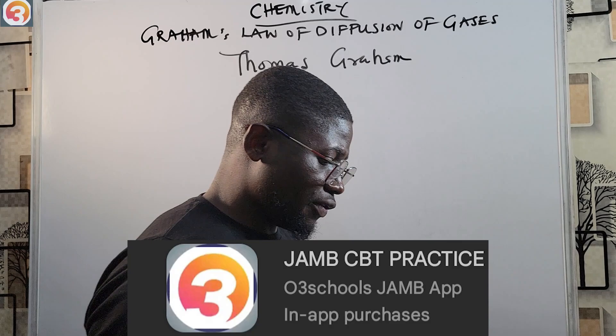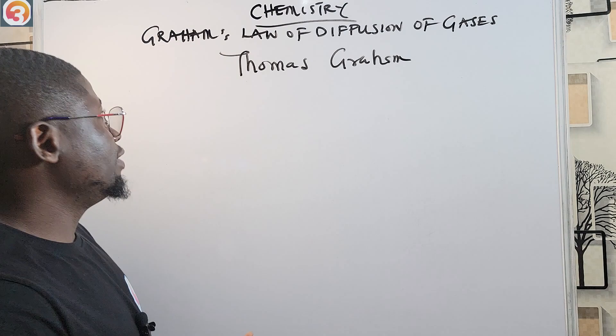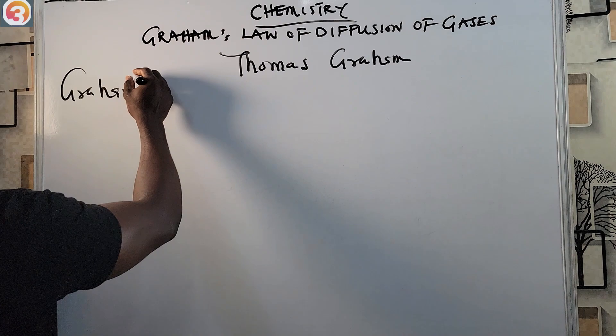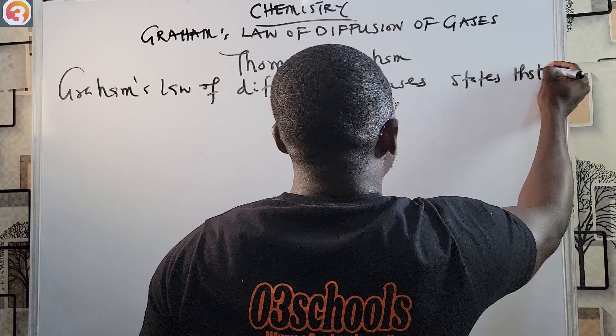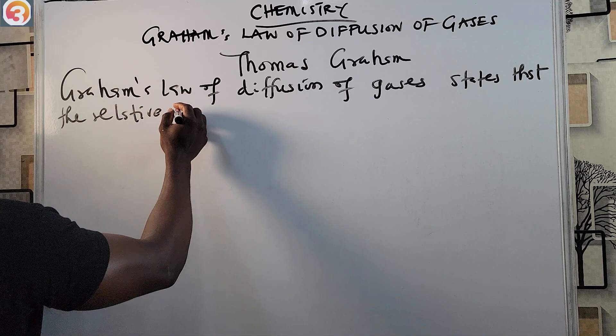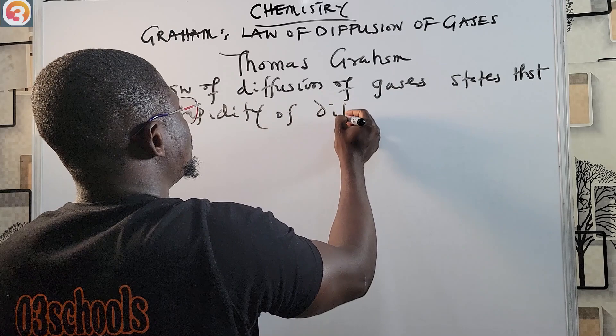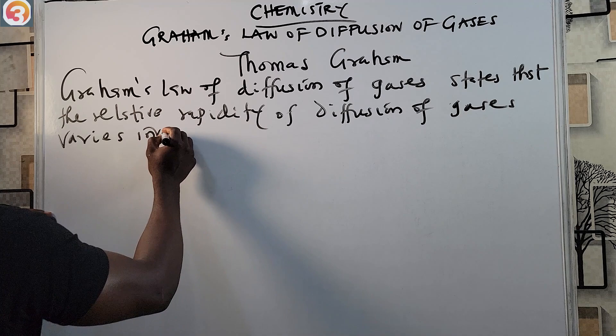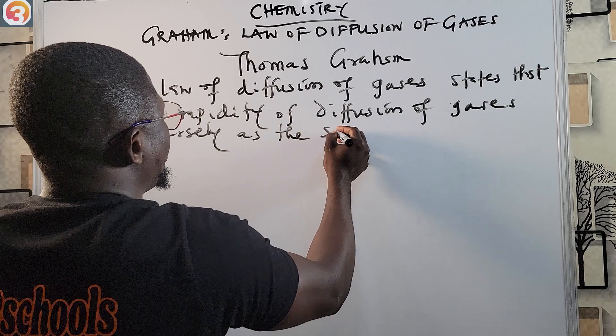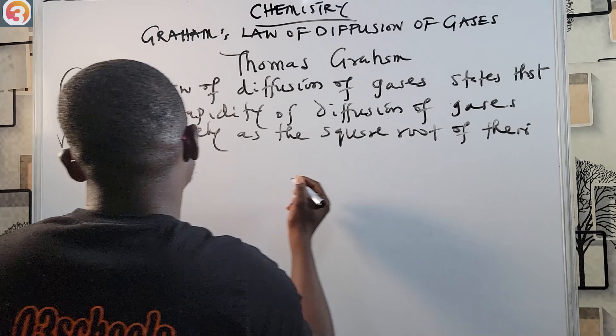So I'm looking at Graham's Law of Diffusion of Gases. What does this law state? Graham's Law of Diffusion of Gases states that the relative rapidity of diffusion of gases varies inversely as the square root of their densities.